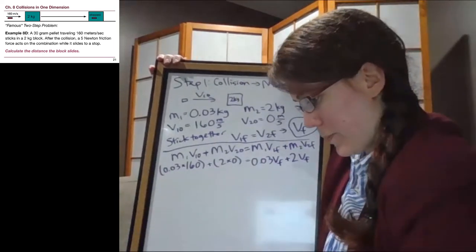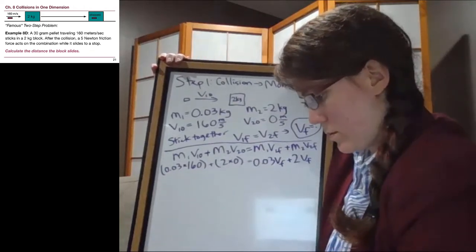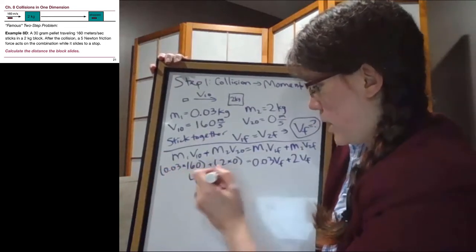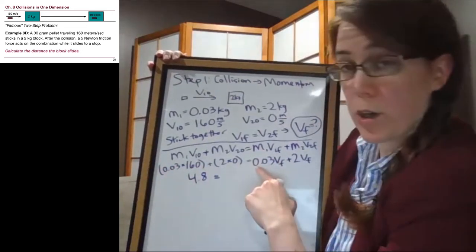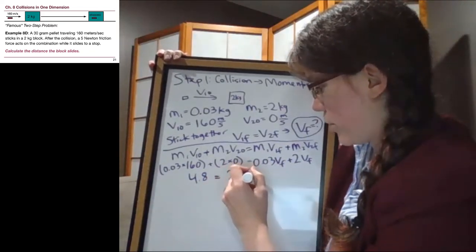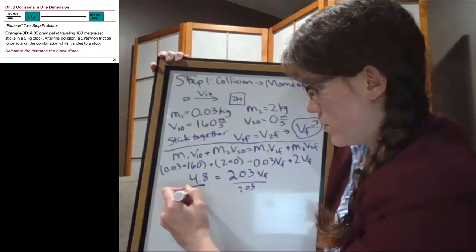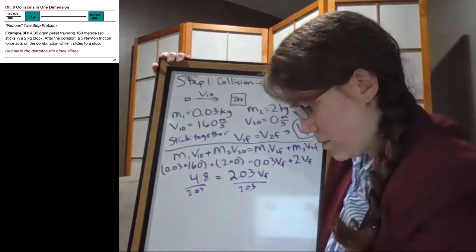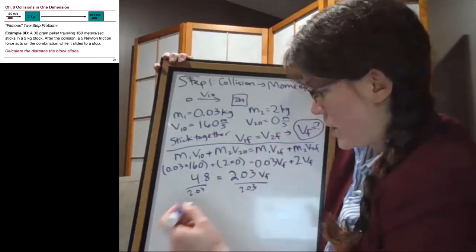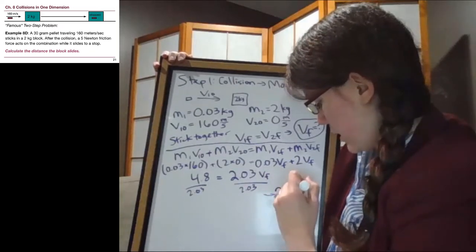Okay, on the left we can plug that into our calculator and what we get is 4.8. On the right side we have 0.03 v final plus two v final, which means we have 2.03 v final. We divide both sides by 2.03 and we get 2.36 meters per second after the collision.